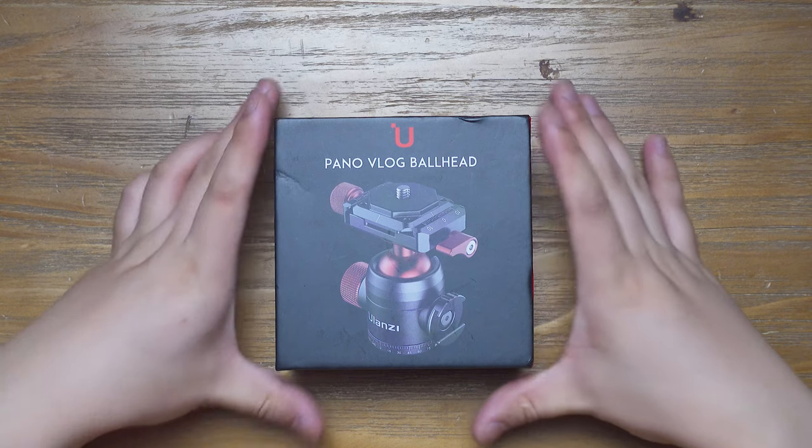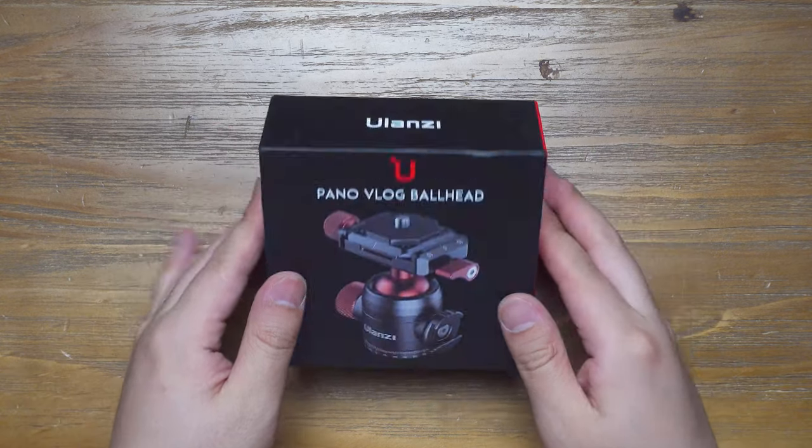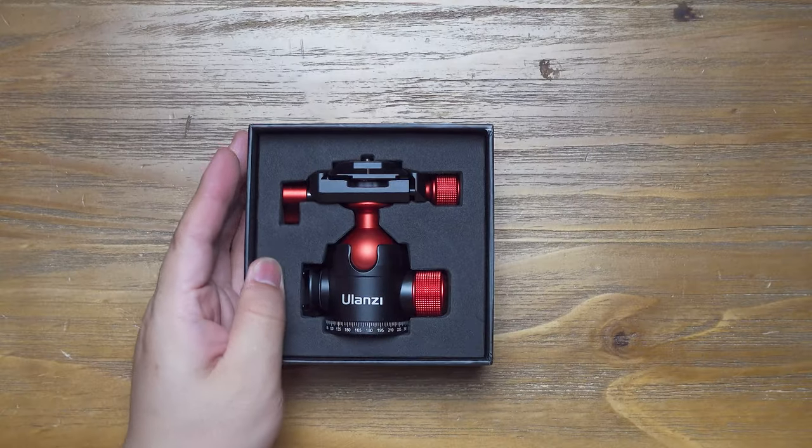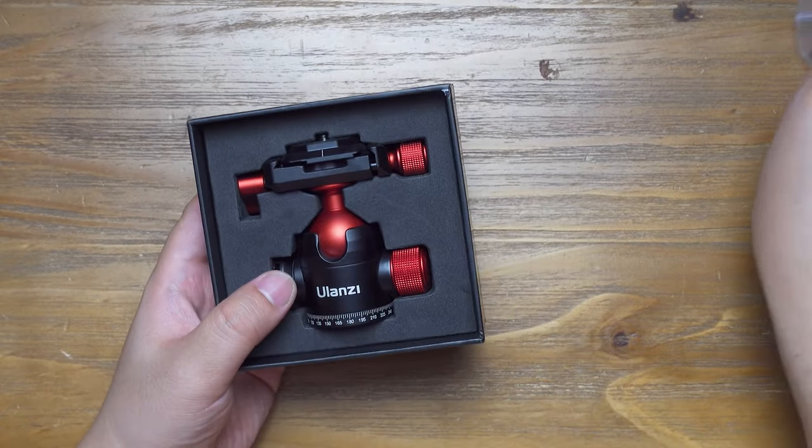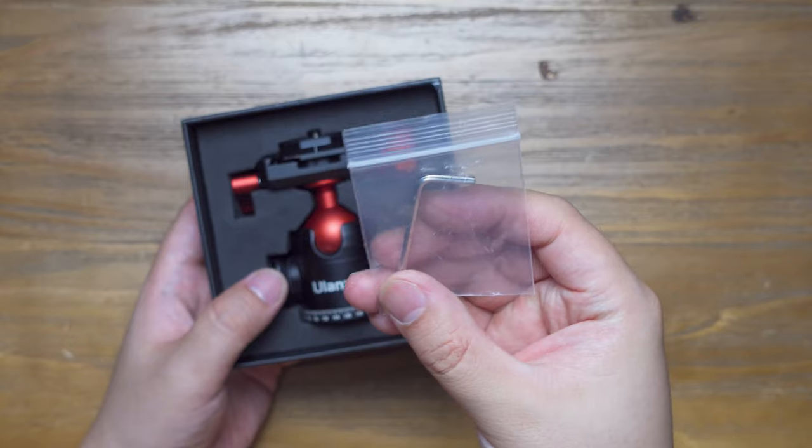So first, let's take a look at the box and unbox this ball head. When you open it, inside the box you will get a hexagon mount like this. This hexagon mount can be used to adjust the damping of the cold shoe mount on the side.